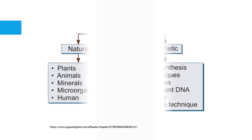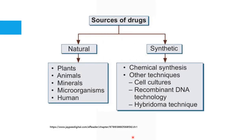This diagram shows the general classification of the sources of drugs. Generally, we can classify drug sources into two major groups: the first group are the natural sources, and we also have the synthetic sources.